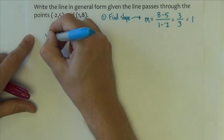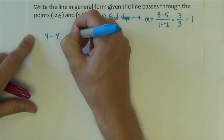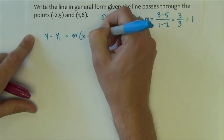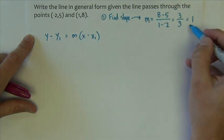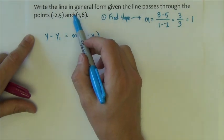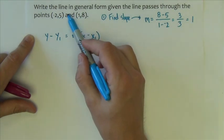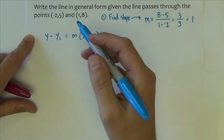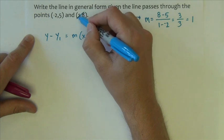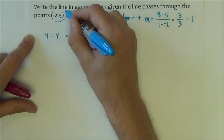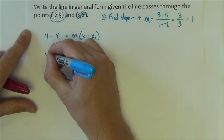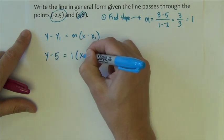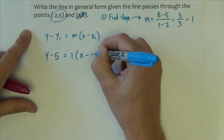Now we can use point slope. y minus y1 equals mx minus x1. My m is over here, so 1. My point, I can choose either of these points, it doesn't matter which one I choose to be the x1, y1, they're both going to result in the same answer. I'm going to go ahead and choose this one.